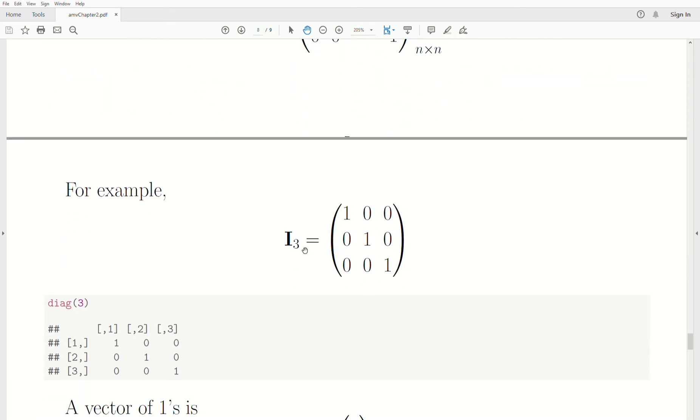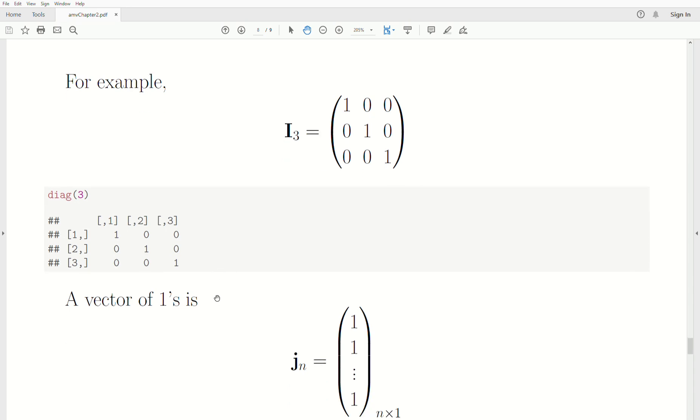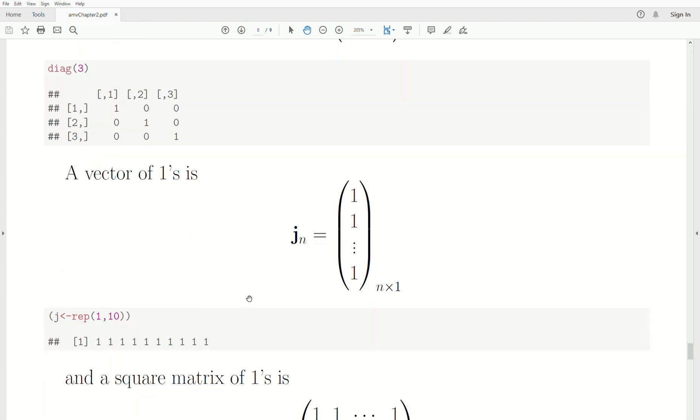So a quick example, I3, so that's a three by three matrix, the identity matrix is diagonal with ones down the middle. To create this in R, you'd say diag three. Now, if diag is a number, then it creates that matrix. So it's a three by three matrix with ones down the middle.